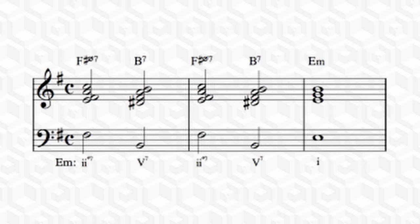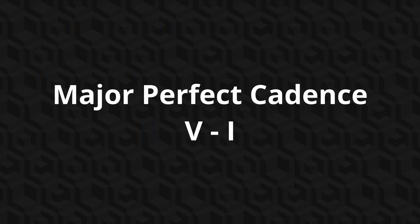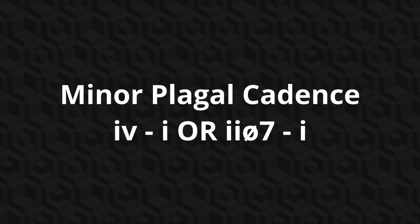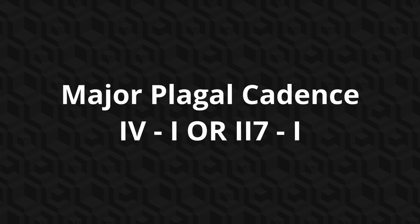Similarly, entire chord progressions have negative equivalents. Take cadences as an example. The negative version of a major perfect cadence is a minor plagal cadence. Likewise, the negative equivalent of a major plagal cadence is a minor perfect cadence.